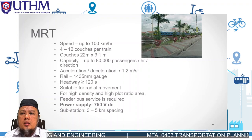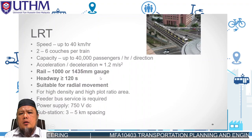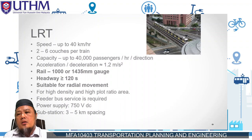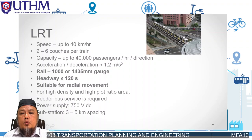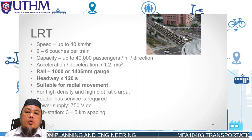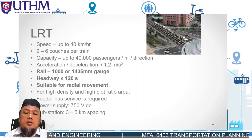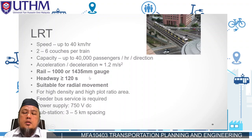LRT stands for Light Rail Transit — 'light' meaning less capacity than MRT. The speed is up to 40 km/h, with 2 to 6 coaches per train, and capacity up to 40,000 passengers per hour per direction. The headway and other parameters are quite similar to MRT.